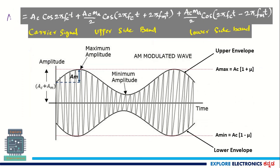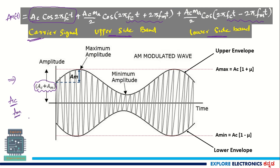So, the expression for AM wave, AM of t, will be like this: AC cos(2π FC t). This first term is a representation of the carrier signal. If you look at the second and third terms, these are representing the upper sideband and the lower sideband. Here it is FC plus FM, and the lower sideband has FC minus FM. The total amplitude of this wave is AC plus AM, where AC is the amplitude of the carrier and AM is the amplitude of the modulating signal.